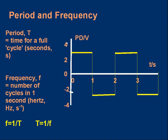Whenever we have alternating currents and voltages, it's usually a regular pattern. These graphs of current or voltage against time are often called waveforms, and they usually have a repeating pattern. The time it takes for the pattern to repeat is called the period. The period, symbol capital T, is the time for a full cycle or full oscillation, measured in seconds. Looking at the graph, the voltage goes up, stays at 3, drops to minus 3, returns to zero, and then the whole pattern repeats — that time is the period.